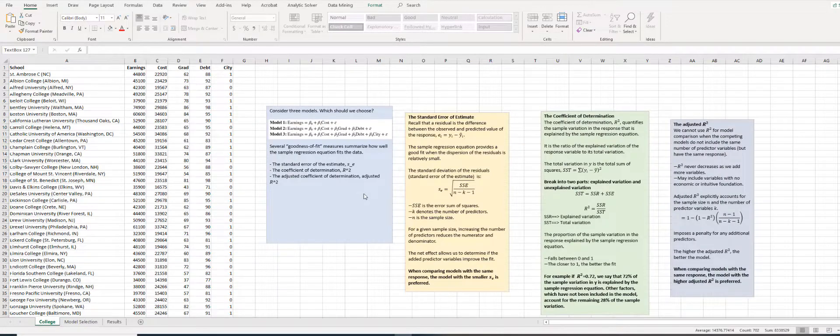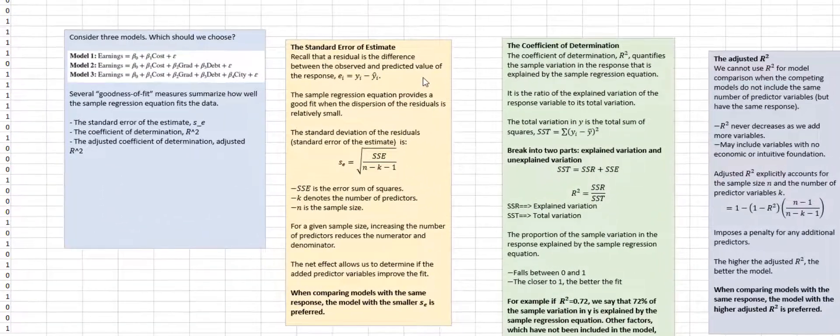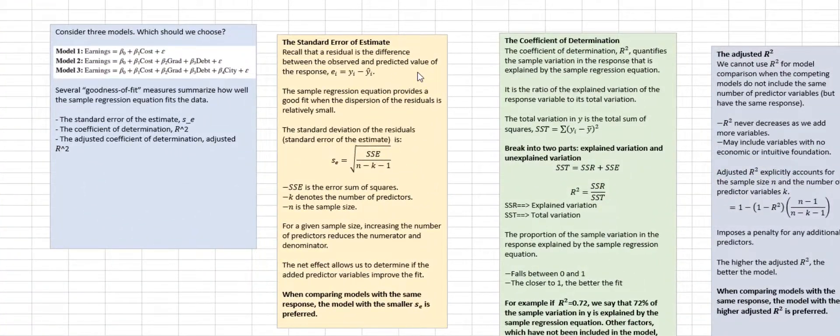Before we estimate the models, I want to talk about three goodness of fit measures. The first one is the standard error of estimate. If you remember from your textbook or the videos that I've made, a residual is the difference between the observed and the predicted value of response. The residual ei is the difference between yi minus yi hat.